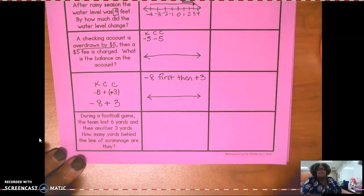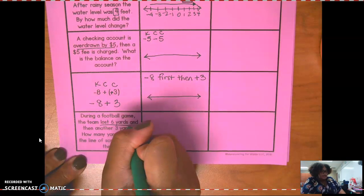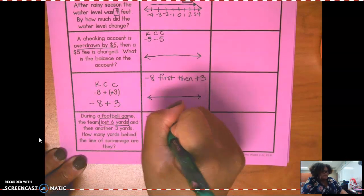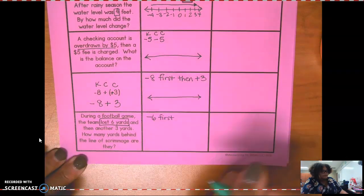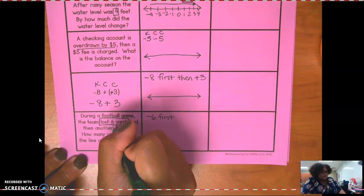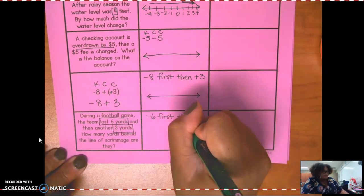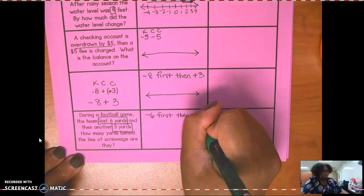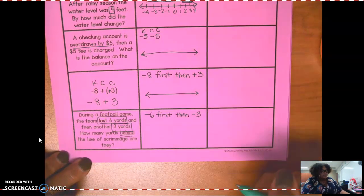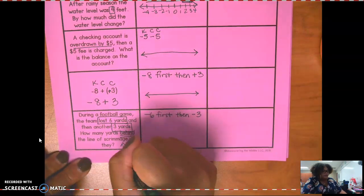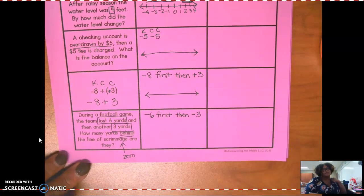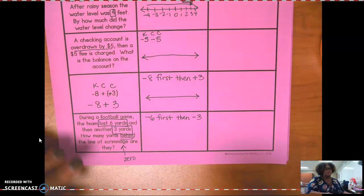During a football game, the team lost six yards. What kind of number is that six going to be? Negative six first. And then another three yards. Then what? What kind of three again? Another negative number. How many yards behind the line of scrimmage are they? The line of scrimmage is zero. Okay, let's just assume that it's zero. So we start at zero, then we go negative six, and then we go negative three more. And then your answers go over here in these solution boxes.